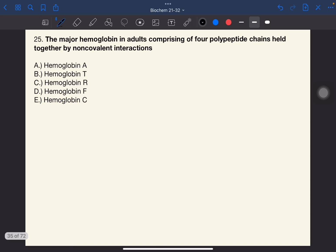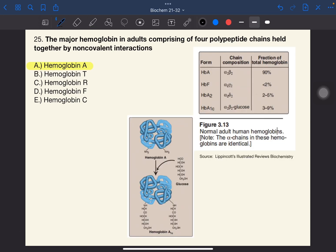Number 25. The major hemoglobin in adults comprising of four polypeptide chains held together by non-covalent interactions. The answer to this one is A, hemoglobin A. As you can see here in the table, these are the different types of hemoglobins in normal adults.